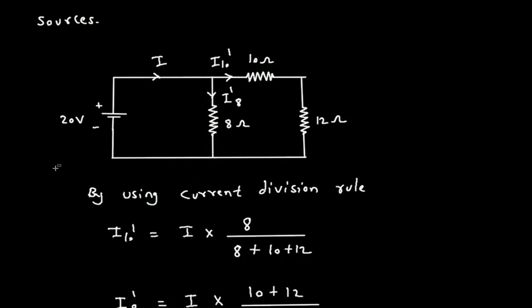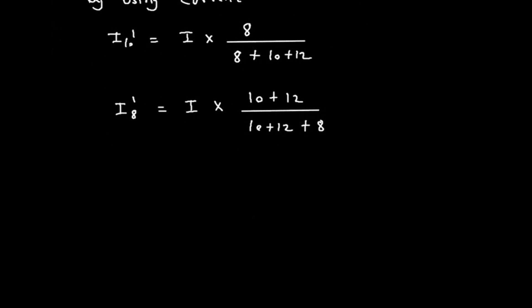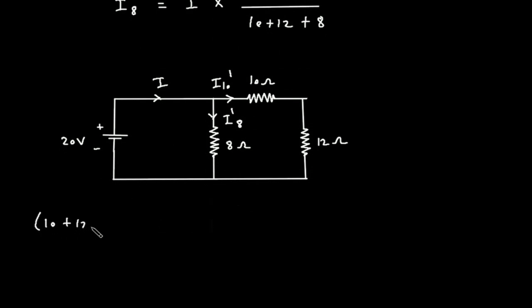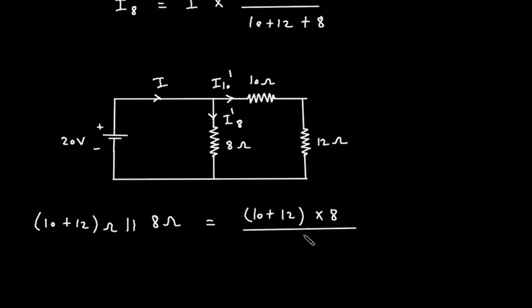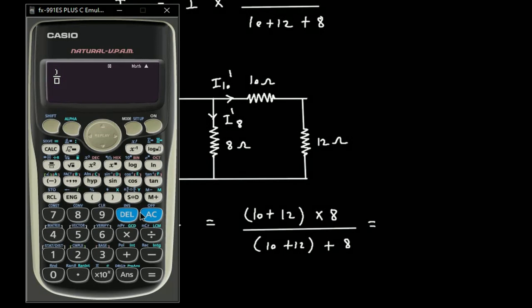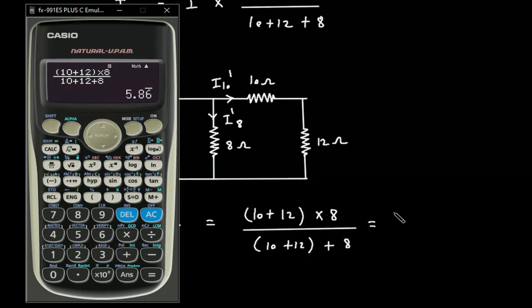Now we will find the total current I. We can see that the 10 plus 12 ohm combination is in parallel with 8 ohm. So the equivalent resistance is (10 + 12) × 8 divided by (10 + 12 + 8), which equals 5.86 ohm.